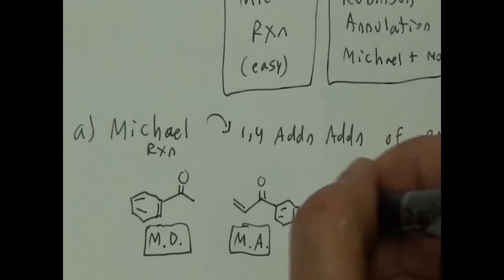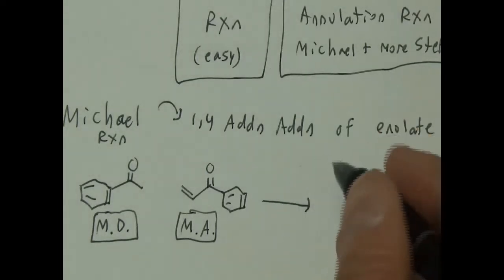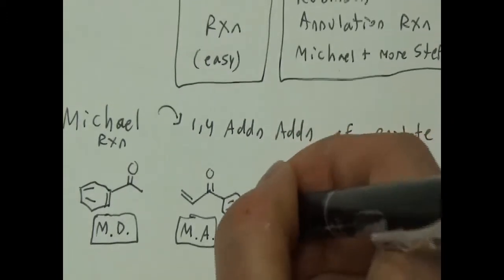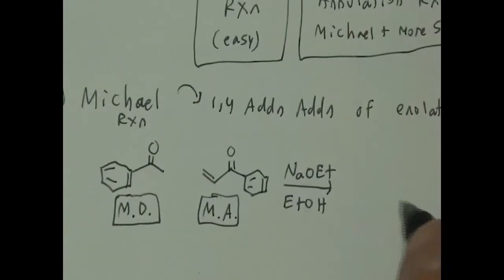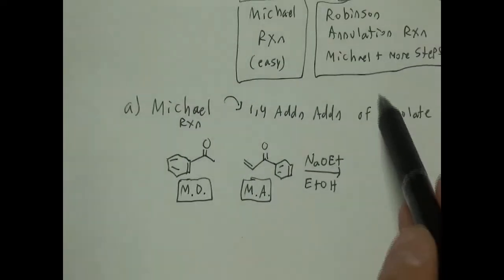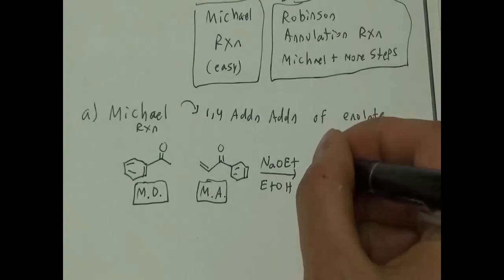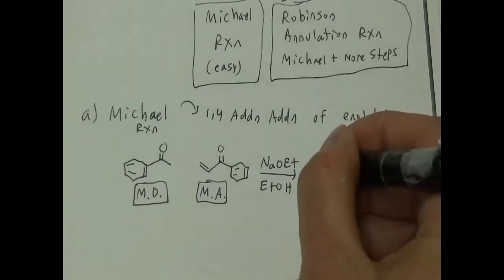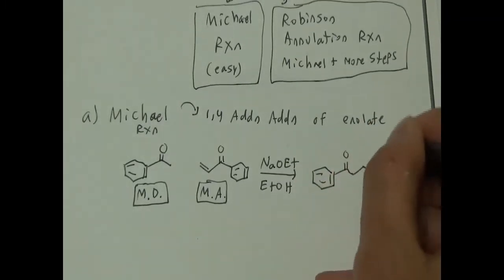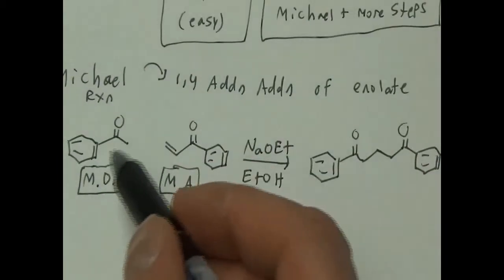When I react these, I'm going to use NaOEt — sodium ethoxide — and ethanol. For the Michael reaction and the Robinson we'll see in a second, it's NaOEt and ethanol. The product is just going to be these two things attached — with no double bonds — and a ketone. The Michael donor attacks the Michael acceptor and makes that.